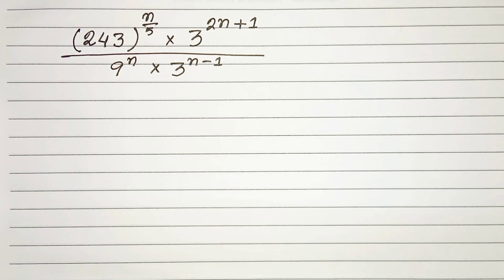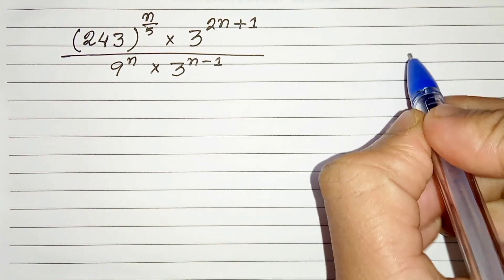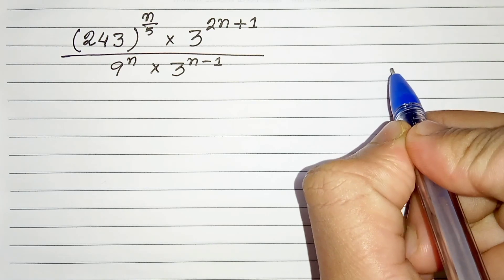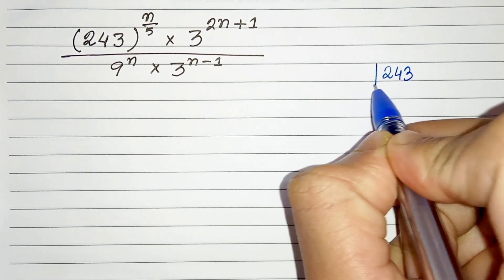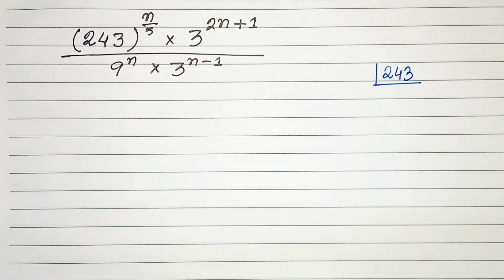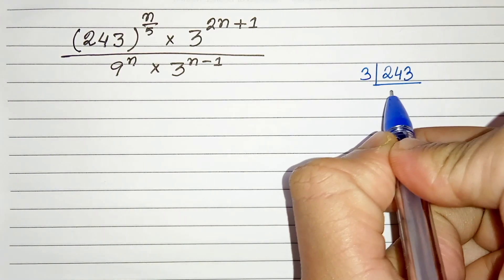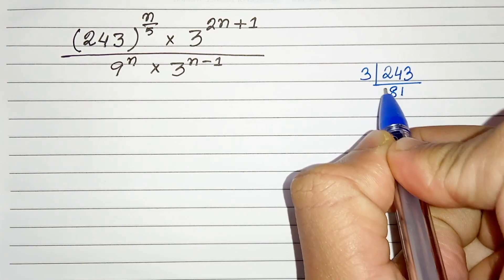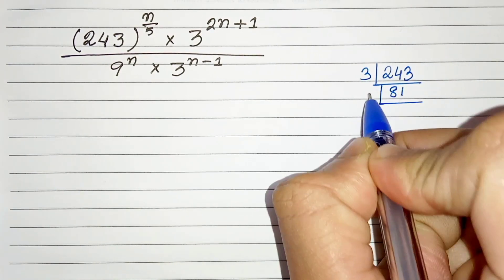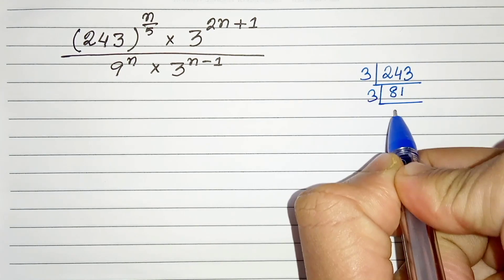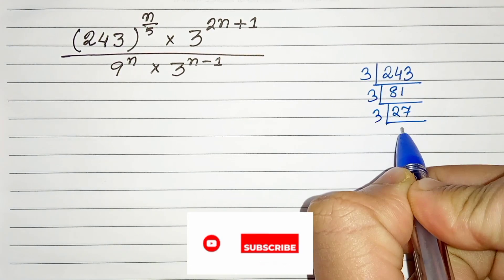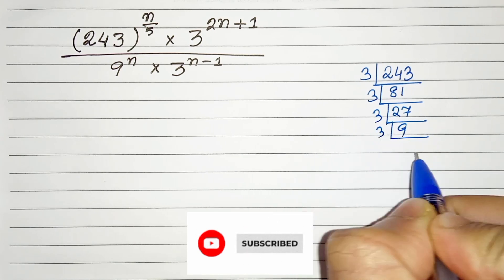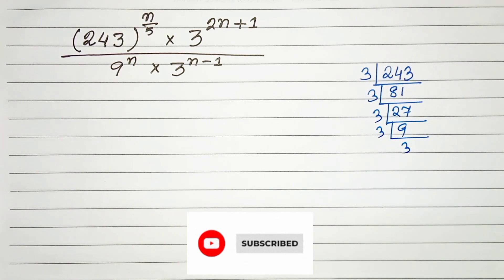First of all, let's find the factor of 243. So, 243 can be divided by 3 and we will get 81. And if we divide 81 we will get 27. And then it will be 9, and then we will get 3.